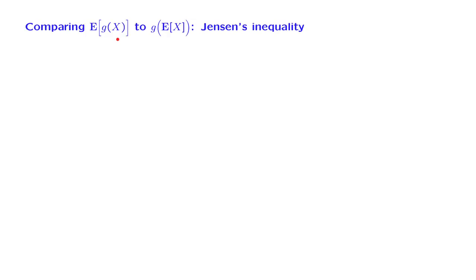Let x be a random variable, and let g be a function. We know that if g is linear, then the expected value of the function is the same as that linear function of the expected value. On the other hand, when g is non-linear, in general these two quantities will not be related. But there is a special case in which we can establish some relation between these two quantities in the form of an inequality. This is Jensen's inequality, which we're going to develop.